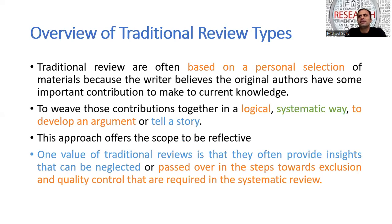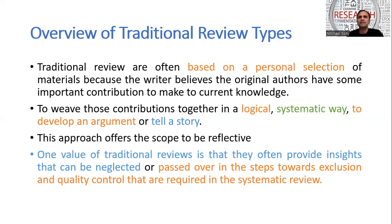Traditional literature review is basically done for thesis, research proposals, and also research papers which are not exclusively based on literature review. A traditional literature review is often based on personal selection of material, used to drive in the author's point of view. It is done in a logical, systematic manner to develop the argument and tell the story which the author prefers. This approach helps the researcher to be reflective.